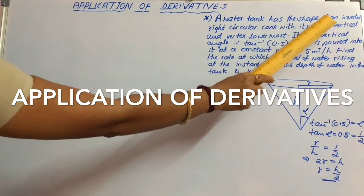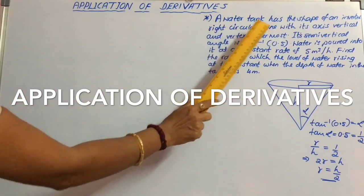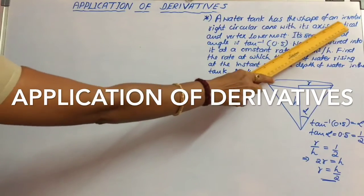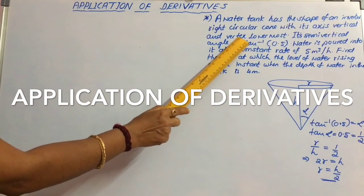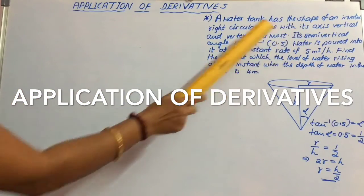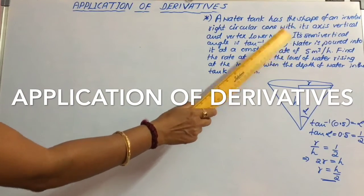A water tank has the shape of an inverted right circular cone with its axis vertical and vertex lowermost. Its semi-vertical angle is tan inverse of 0.5.